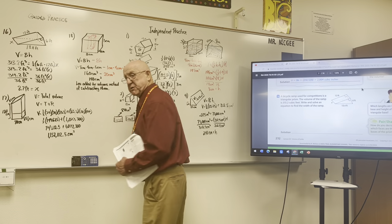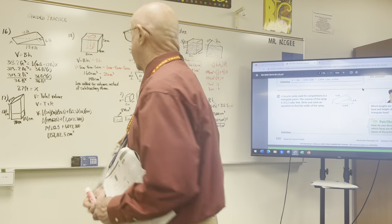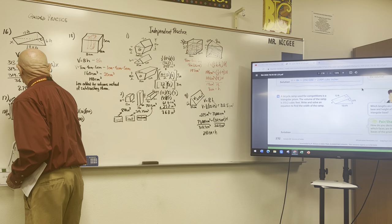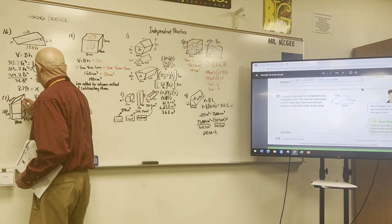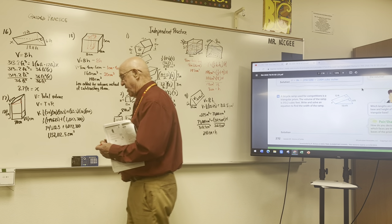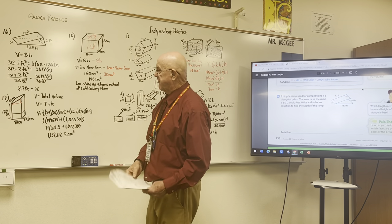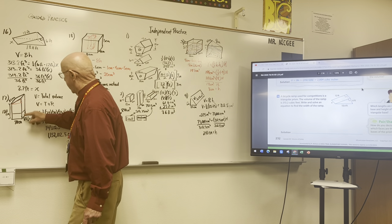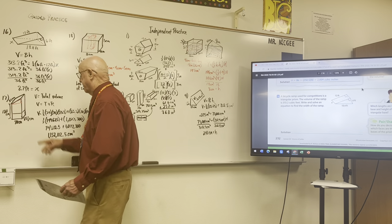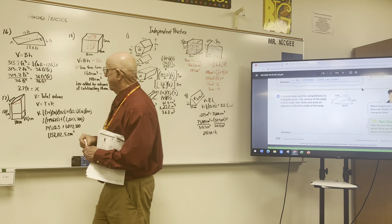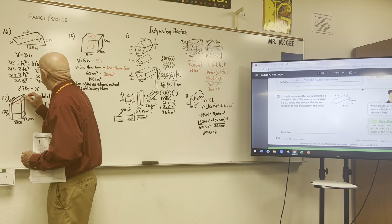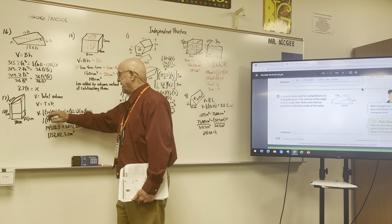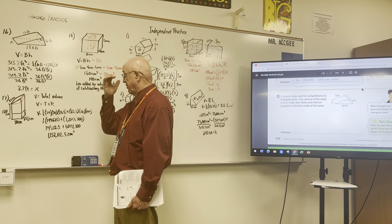So if we actually draw that triangle in — it would come across here like this and go up here like that. We're looking at that triangle: it is 25 centimeters tall, 70 centimeters across the bottom, and 85.5 centimeters in the depth direction. The prism itself is 85.5 centimeters deep. So the volume of the triangular part is one half of 25 times 70 times 85.5.